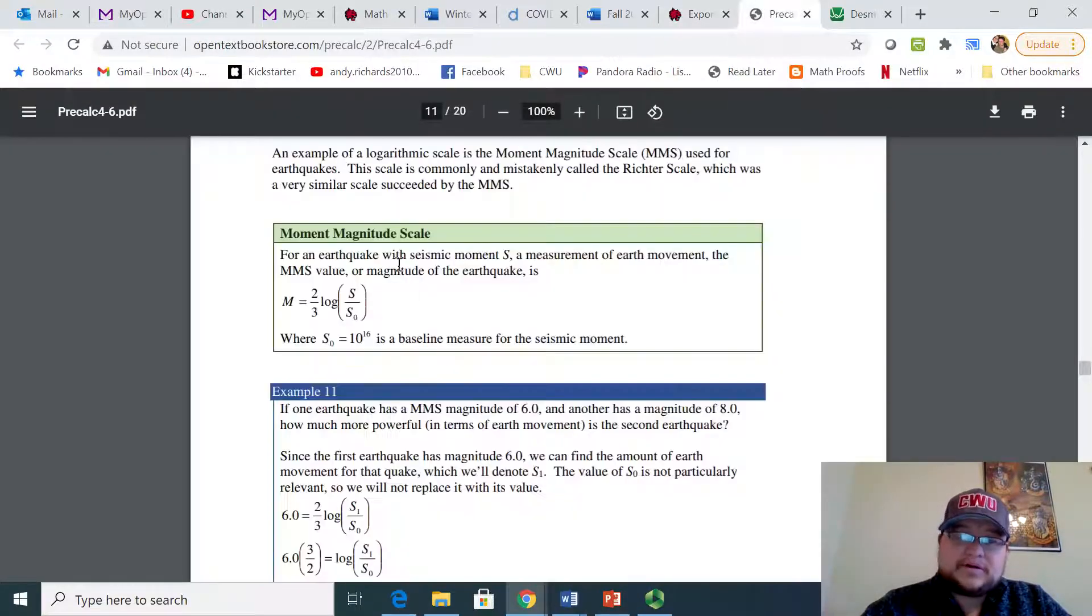Well, if I go to the text here, what we're going to be using is this. When we are trying to figure out the intensity of an earthquake, our current system MMS here is going to be what we're going to be using for M, where S is what the size, the seismic moment is.